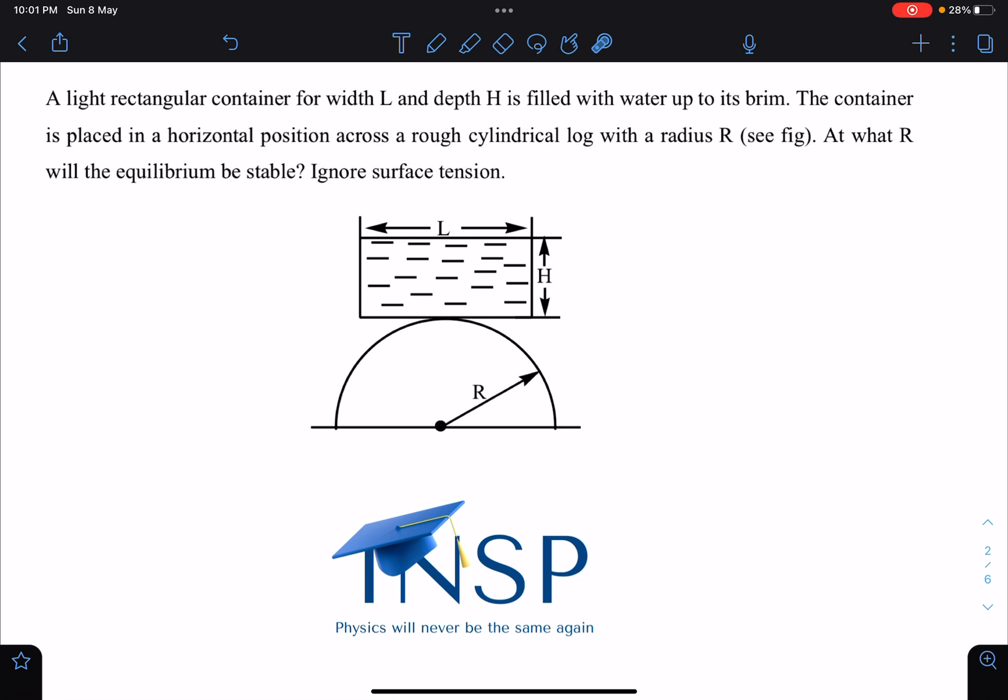At what radius R will the equilibrium be stable? You have to ignore surface tension forces and everything, you have to consider as smooth surfaces only. So it's quite a challenging problem in my opinion and method-wise it will be pretty easy.